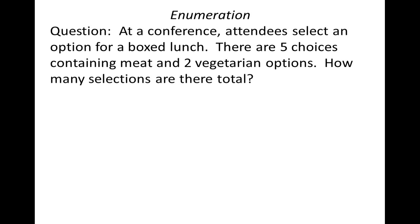So we're at a conference, and as an attendee I'm going to order a boxed lunch. There are five choices of boxed lunch that contain some sort of meat, and two vegetarian options. How many selections are there total? It's very simple — the answer is seven, because we have to choose one of the five meat or one of the two vegetarian options, so there are only seven options available.